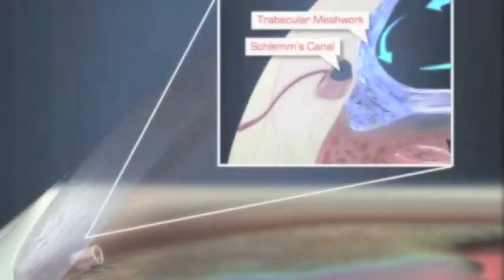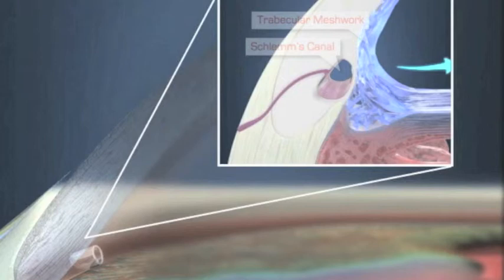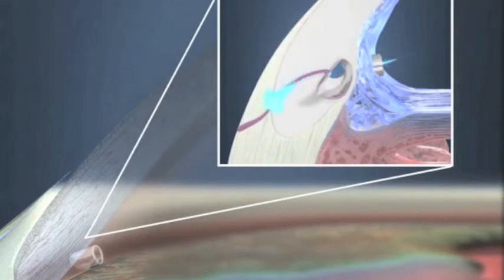The eye stent implant is inserted through the trabecular meshwork to create a bypass channel that allows fluid to drain into Schlemm's canal and into the bloodstream. By lowering eye pressure, the eye stent implant may reduce your need for glaucoma medication.